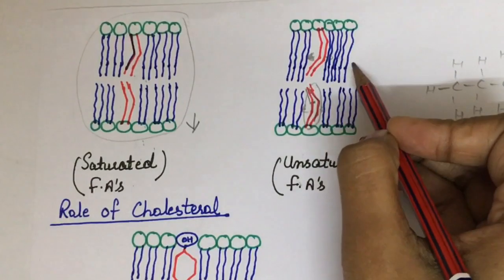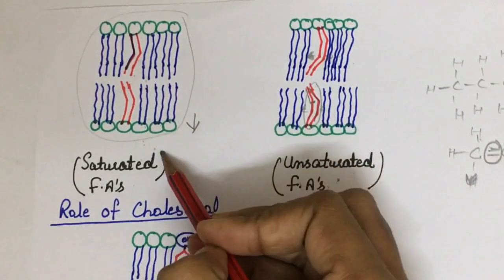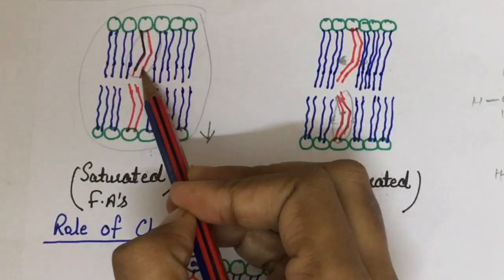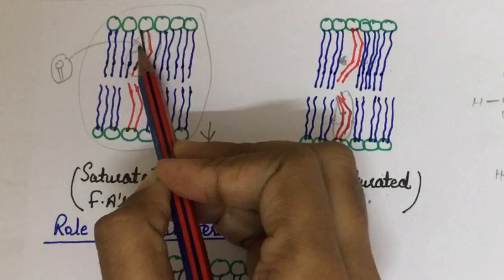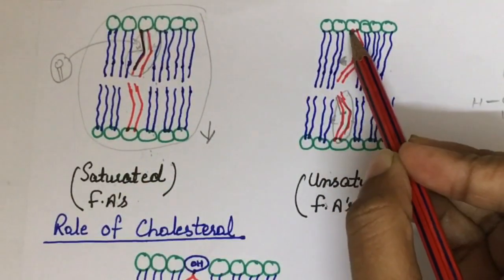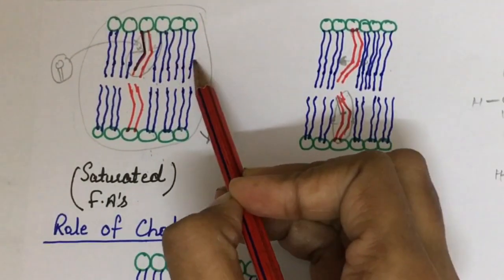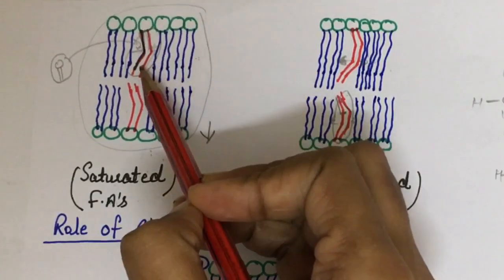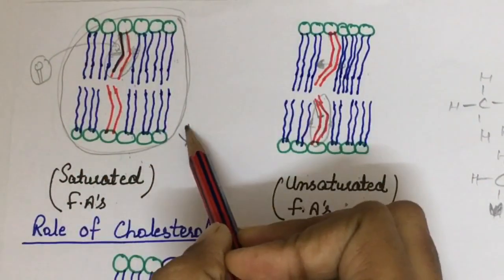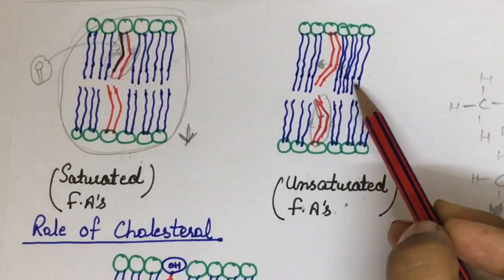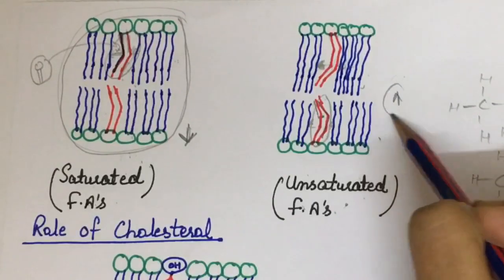Because of these kinks and double bonds, unsaturated fatty acids push adjacent molecules away, which helps in maintaining fluidity. Saturated fatty acids fit more easily into the structure and pull adjacent molecules towards them, getting stacked and compressed, so fluidity decreases. In unsaturated fatty acids, because of the kinks, molecules are pushed away, so fluidity increases.